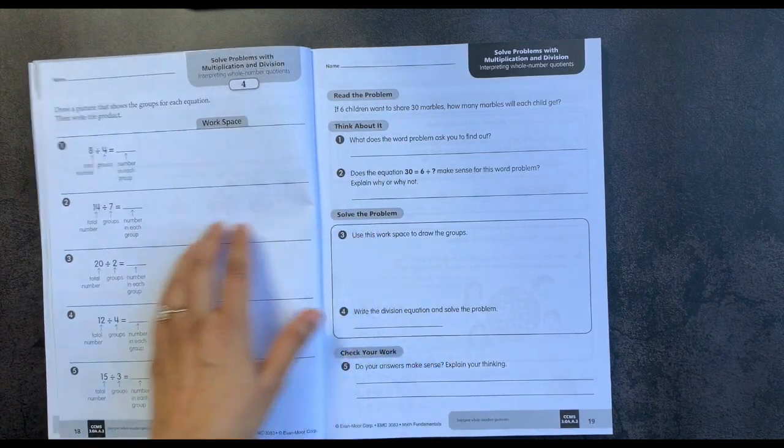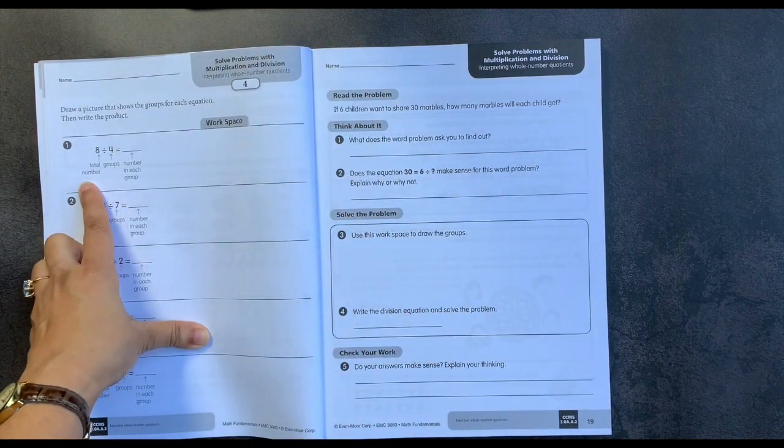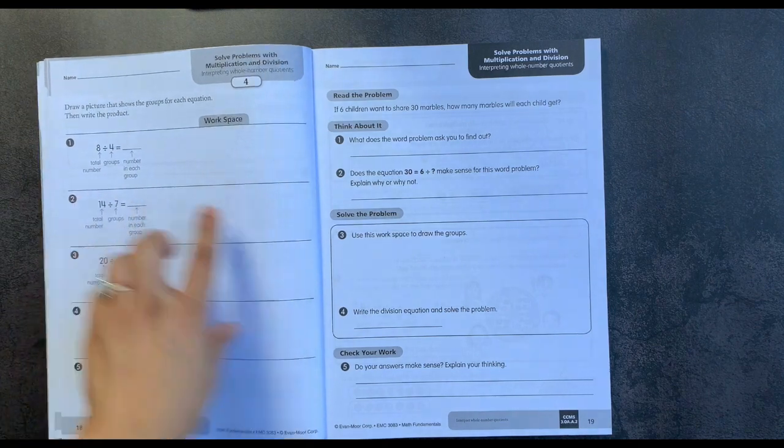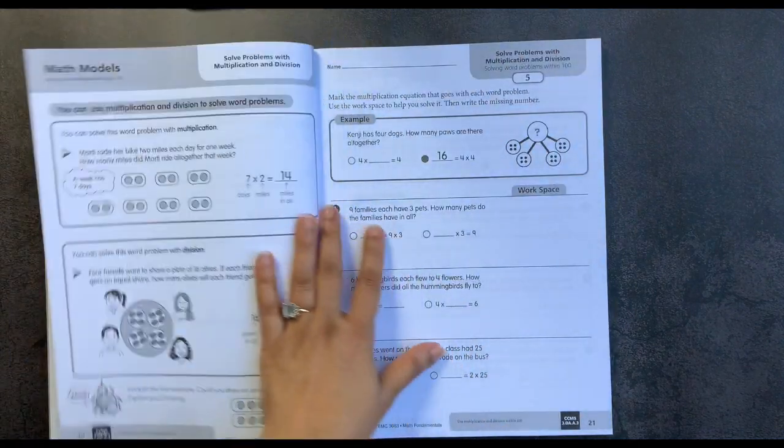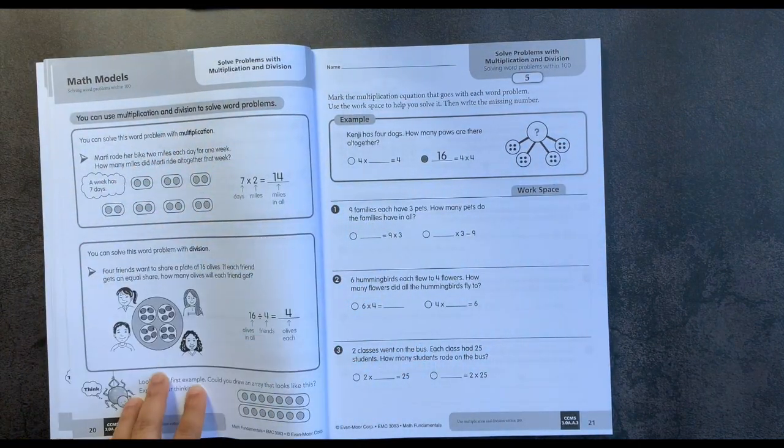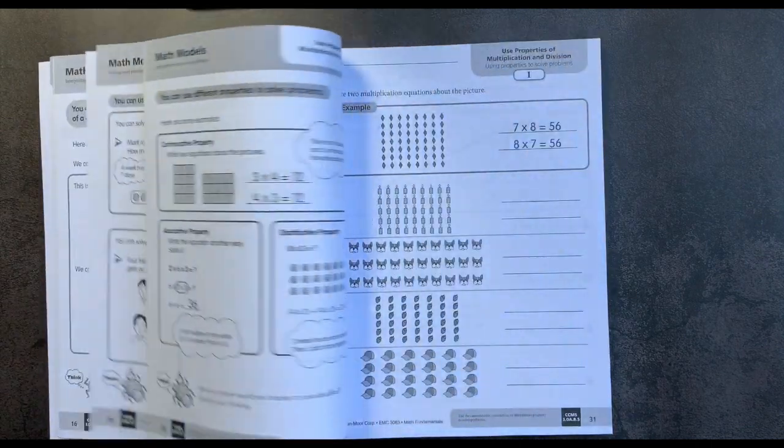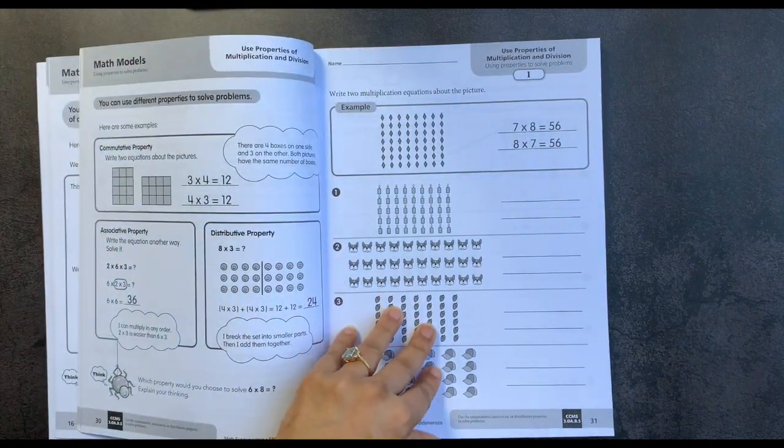So I'm just going to flip through swiftly so you can see. I really like how they specifically lay out theoretically what each number in an equation means and the graphic nature of the math models. So I'm just going to flip ahead to a different section now.